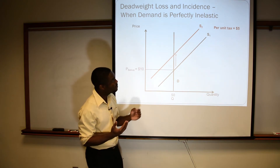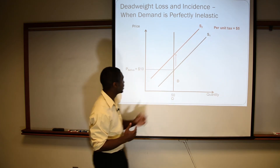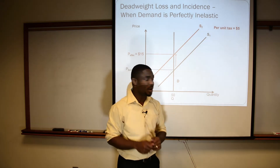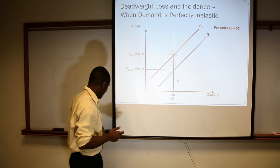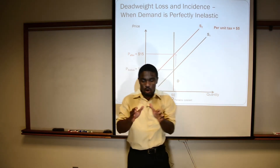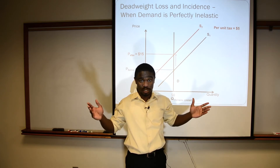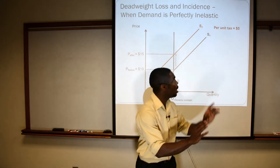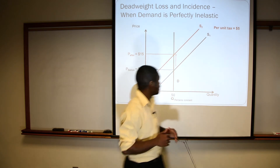Our new equilibrium point must be where our new supply function intersects with our unchanged demand function. So what do we get? We get a new price — the price after the government imposes the tax — of $15. It's not unsurprising that the after-tax price is now exactly $5 more. Why? Because quantity does not respond to price changes. In this theoretical extreme of demand being perfectly inelastic, no matter what the price of the good is, consumers buy exactly the same amount. Which means firms, being rational profit maximizers, simply pass on that $5 tax directly to consumers.